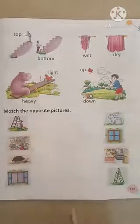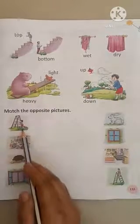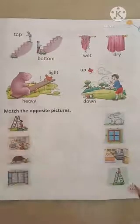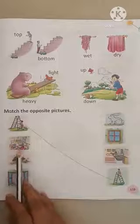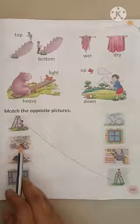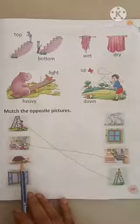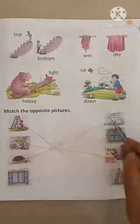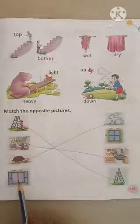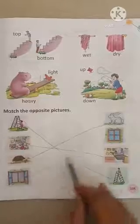Now, match the opposite pictures. Okay, we will match the opposite pictures. What is this? Say, bottom. And bottom, opposite, top. Bottom, opposite, top. Next, dirty room. Dirty, opposite, clean. And say, slow. Slow, opposite, fast. And next, open and close. Open, opposite, close. Open, close. Clear?